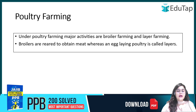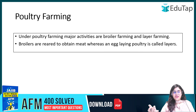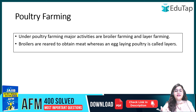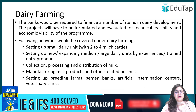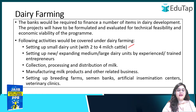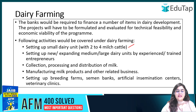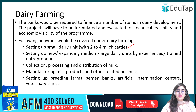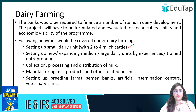For poultry farming, whether you do broiler farming — raising chickens for their meat — or layer farming — raising hens for their eggs — you can take a loan. You also get a loan for dairy farming, which includes setting up a large dairy farm, milk distribution, milk production, milk products, breeding farms, artificial insemination centers, and veterinary clinics.